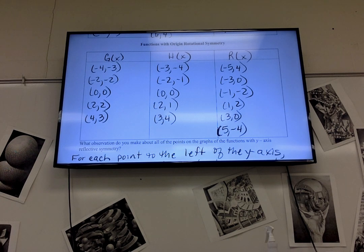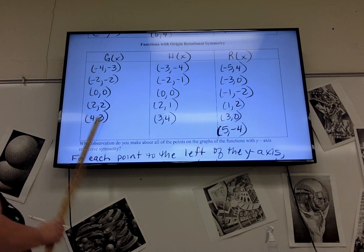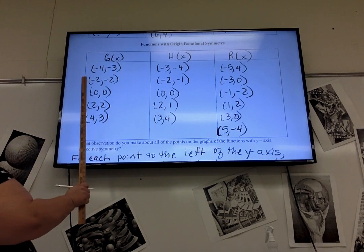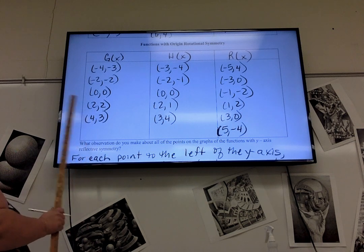So, for example, like on this first one for g of x, if I had negative 4, negative 3, then I also have to have positive 4 and positive 3. Negative 2, negative 2, then I have to have a couple of positives.